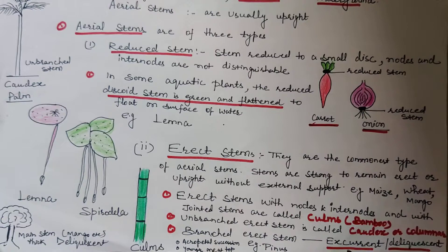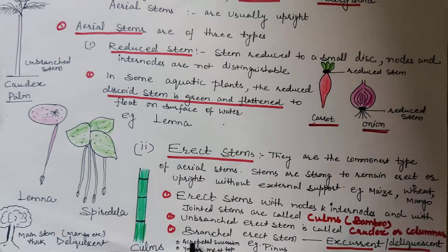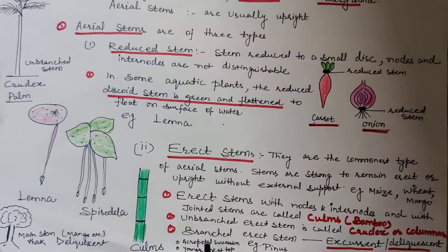The next category under erect stem is excurrent. In excurrent type of stem, the main stem is trunk-like, thickest at the base and tapers towards the apex. Branches arise in acropetal succession, meaning younger branches lie towards the top and older branches lie towards the base. The tree appears cone-shaped. Example is Pinus.